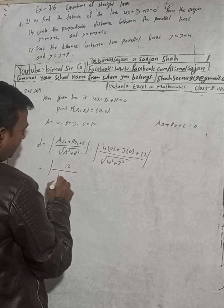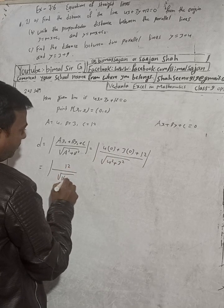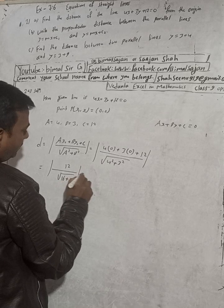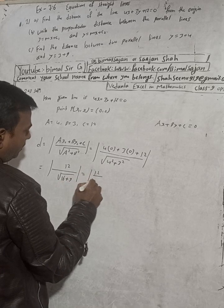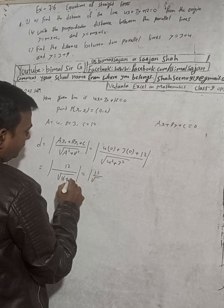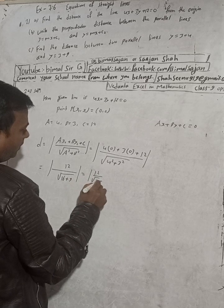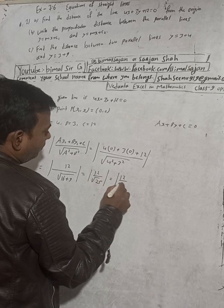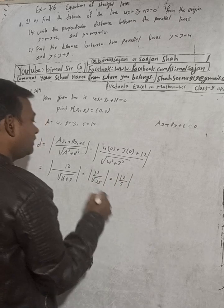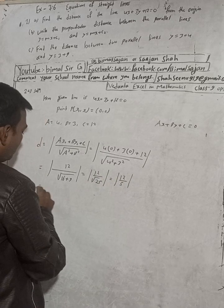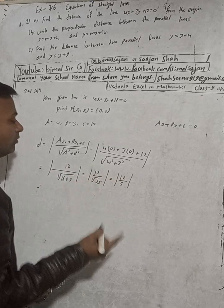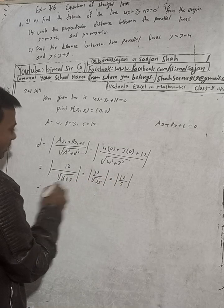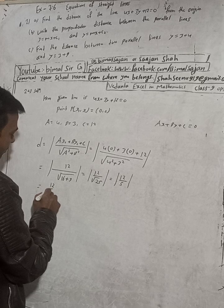This equals 12 divided by 5. There's no need for the modulus sign now because distance is always positive, so taking the positive value gives 12 by 5 units.